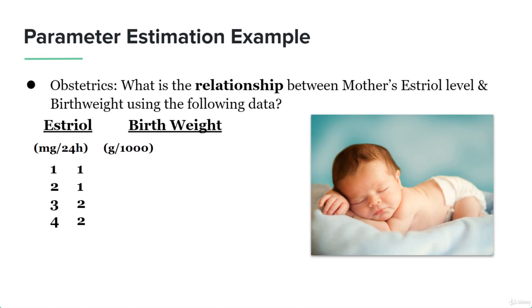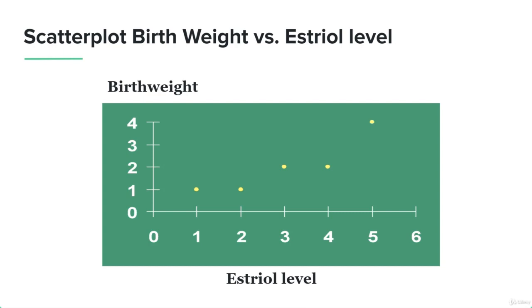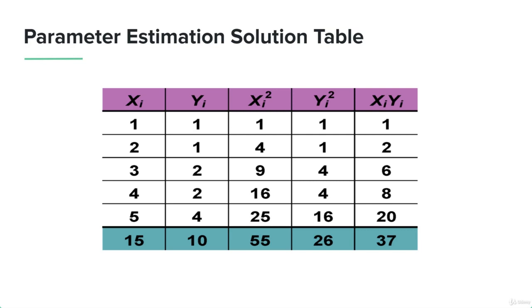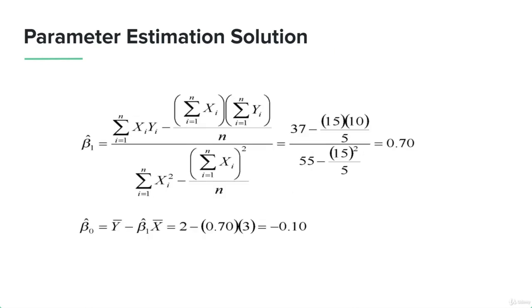Let's look at an example for parameter estimation — modeling the relationship between a mother's estriole level and the birth weight of the infant child. We have the estriole level as x and birth weight as y, and we plot both on a scatter plot. We use the computation table to take x and y values, compute their squares, sum those squares, and also calculate the product of x and y. After that, we put these sums and products into the equation of beta₁ to get the slope, and beta₀ to get the y-intercept of the linear line.